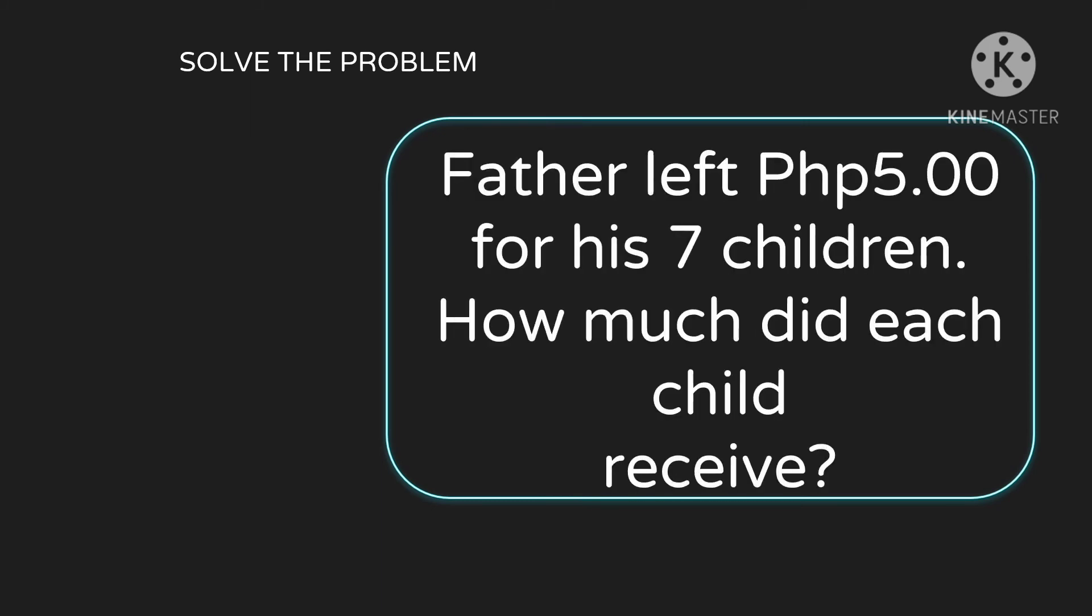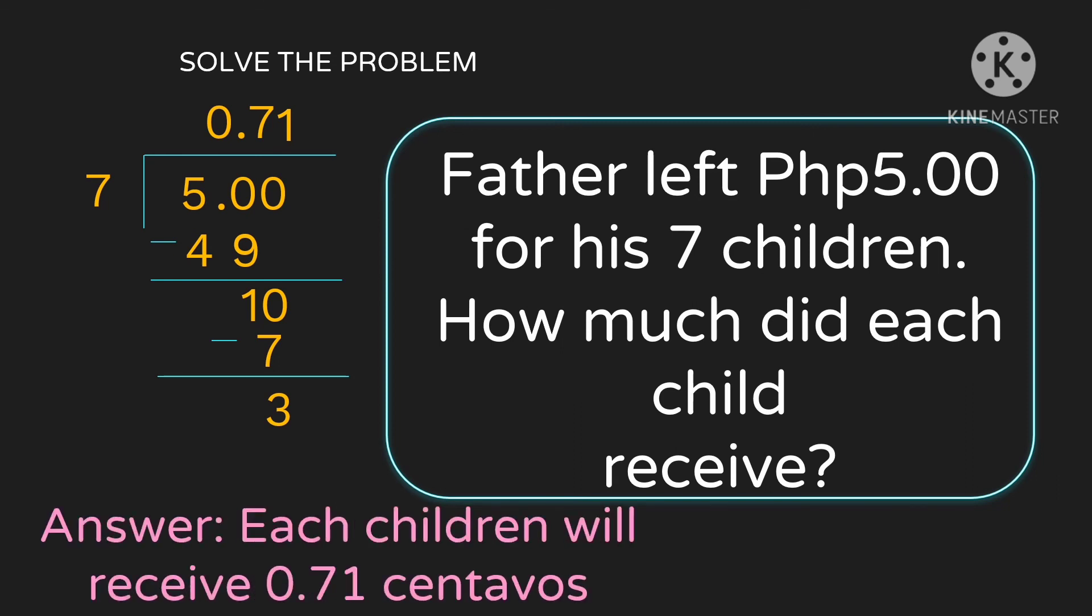Let's have another problem. 5 pesos will be divided among 7 children. 5 is smaller than 7, so we can't divide directly. Add decimal point and 0 to the dividend. 5 divided by 7 is 0, then 50 divided by 7 is 7. 7 times 7 is 49, subtract, 50 minus 49 is 1, bring down 0. 10 divided by 7 is 1, and 1 times 7 is 7, subtract, 3. Stop at 2 decimal places. The amount each child receives is 0.71 or 71 centavos.